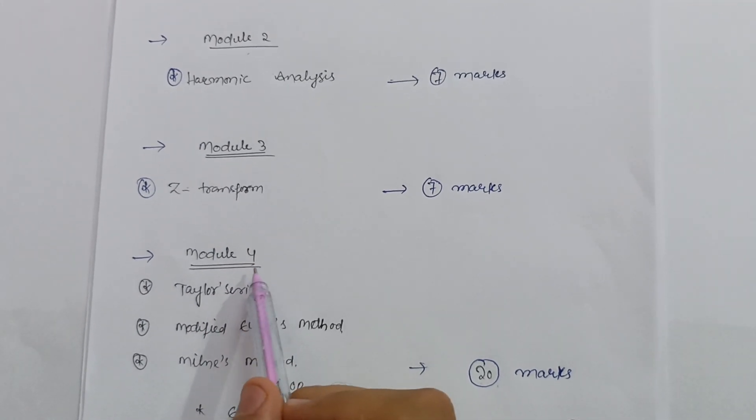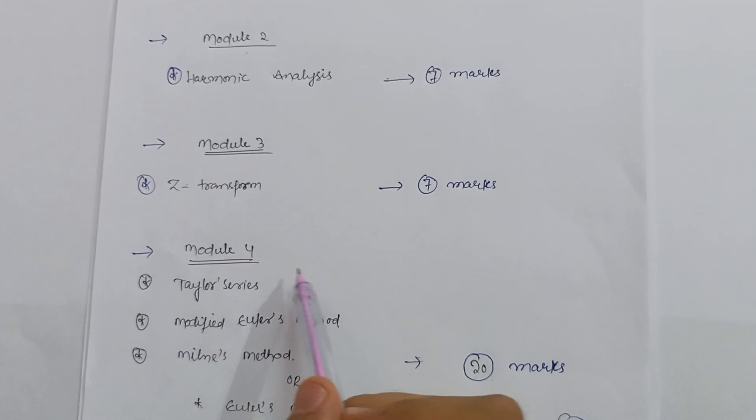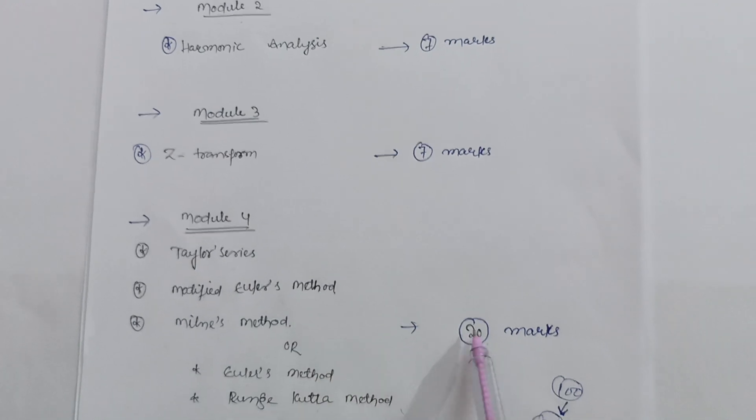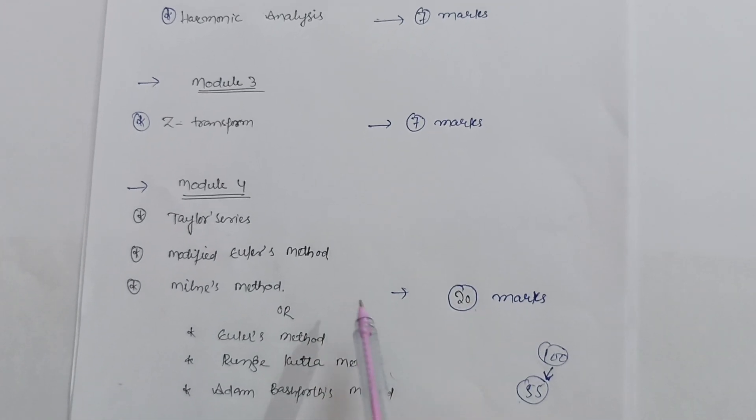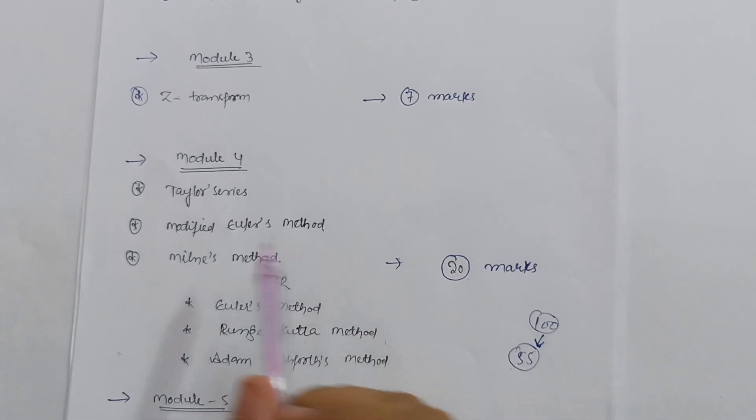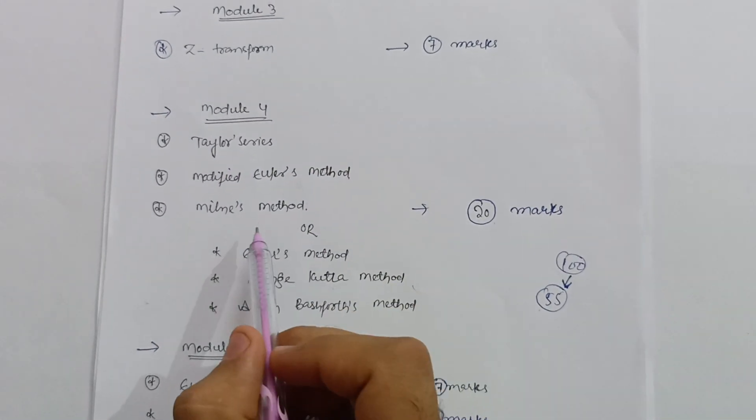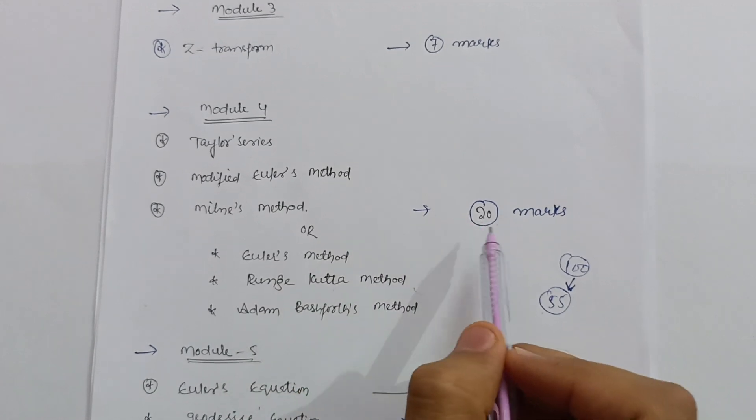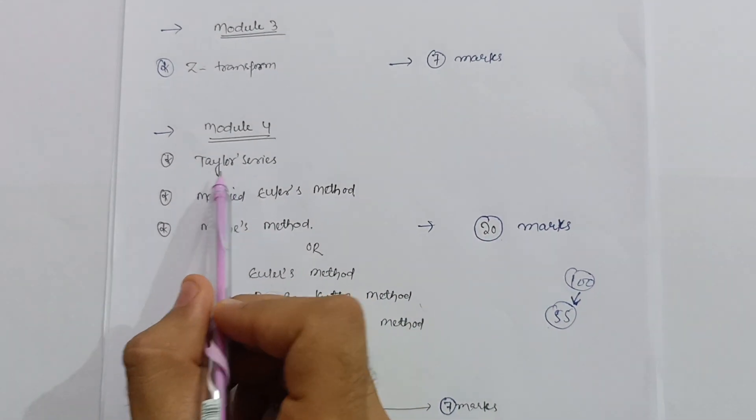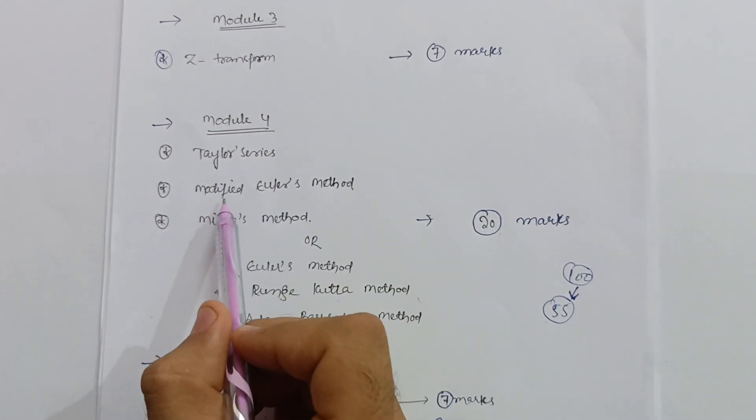Now, the question on module fourth. This is one of the most important modules in this M3 subject and you can secure 20 marks definitely over here, and these 20 marks are in your pocket. So you have to cover these five methods over here, then definitely you can score 20 marks. One method is Taylor Series, second is Modified Euler's Method.